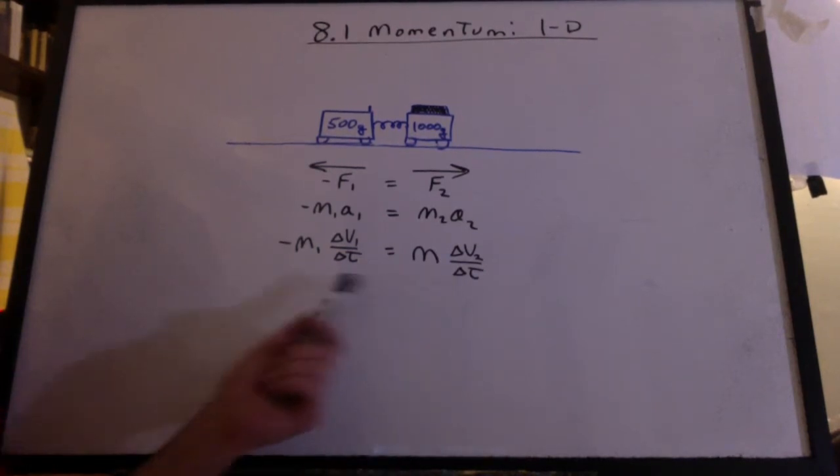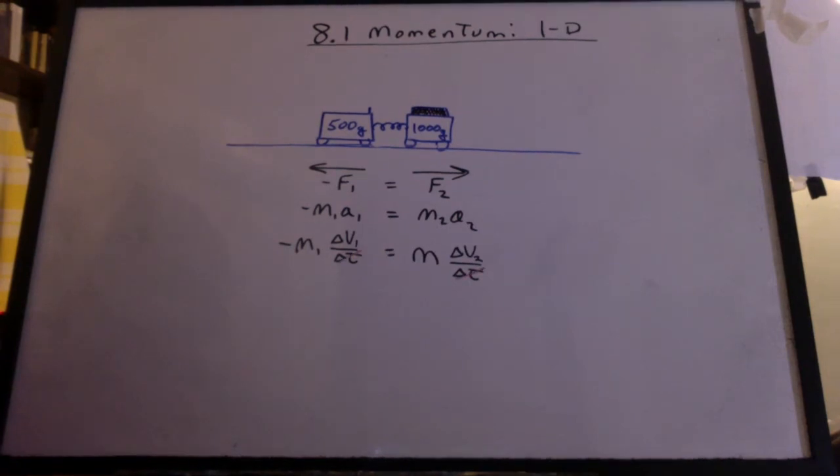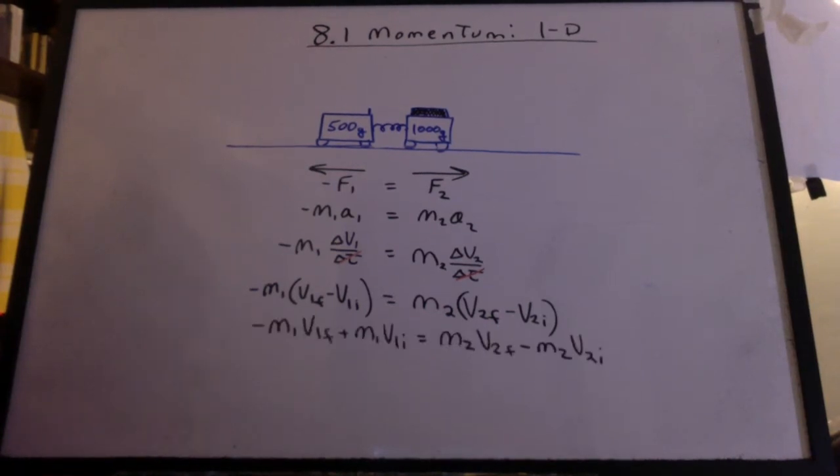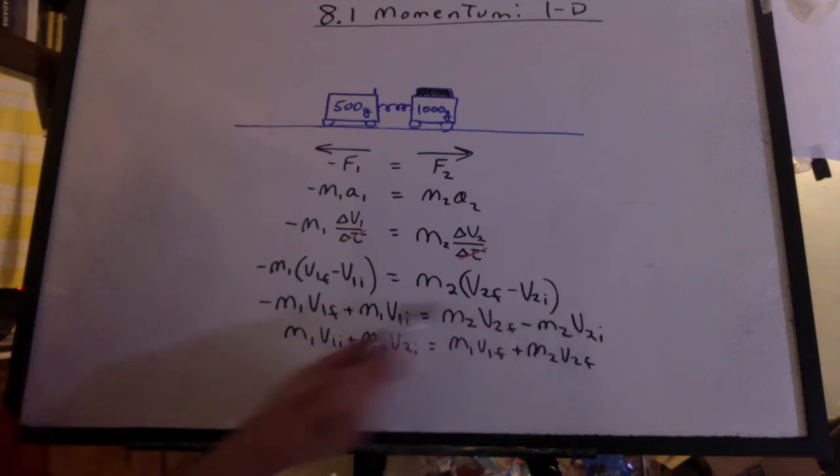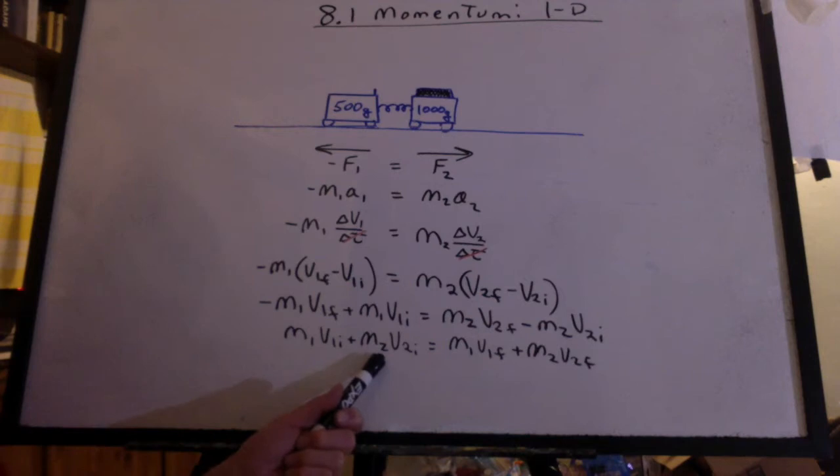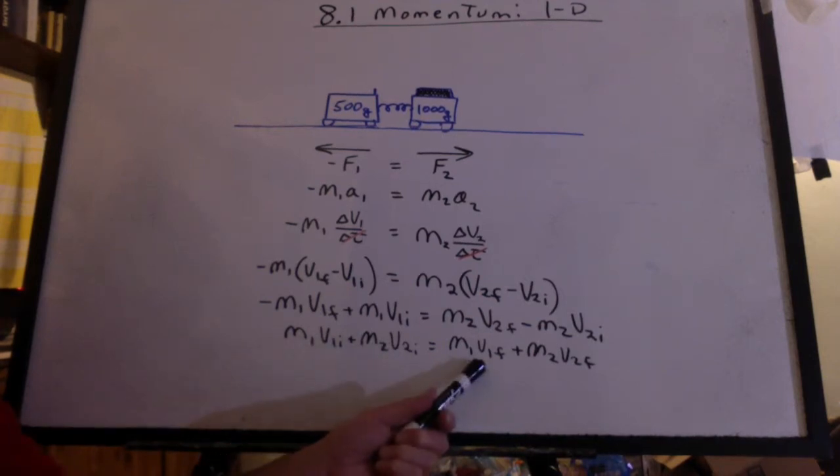When one stops pushing, the other has to stop pushing. We cancel out the times. I expand the delta, distribute the masses. Now I brought all the initials together and the finals together. So we have this quantity here for the initial mass times the velocity of each object, and the final mass times the velocity for each object.